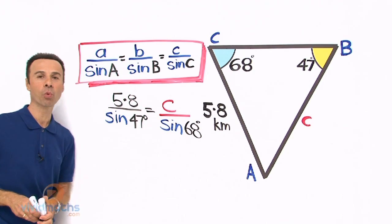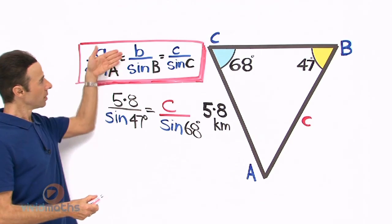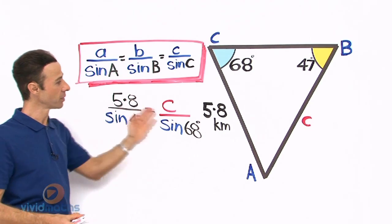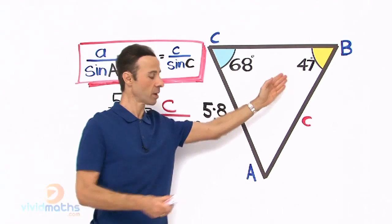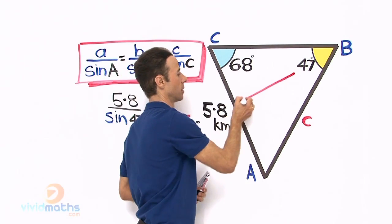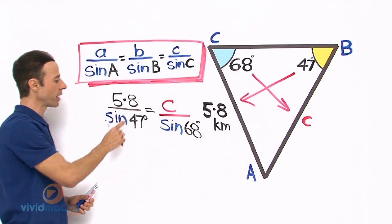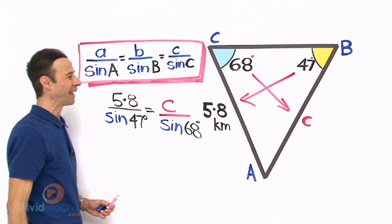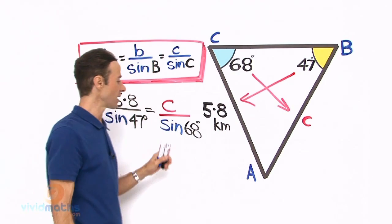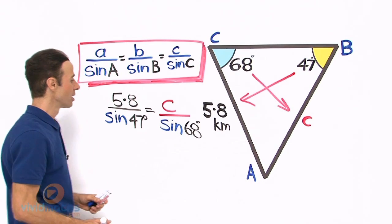There it is, let us point it out one more time to ensure we are correct. We got little b over sine big B - there is little b opposite right there. And there is little c opposite 68, sine 68 there. Let us cross multiply now so we can come up with the solution.